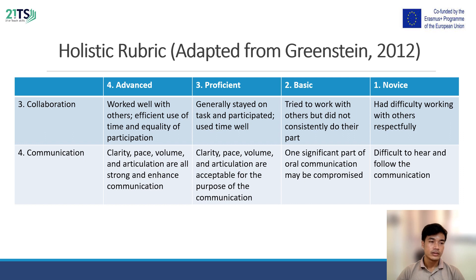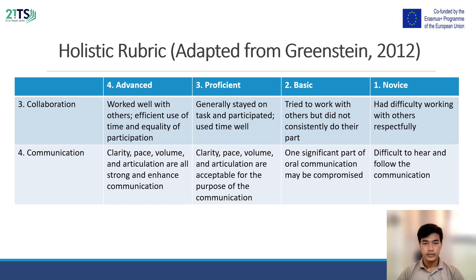At the knowledge level, students have difficulty working with others respectfully. For communication, at the advanced level, clarity, pace, volume, and articulation are all strong and enhance communication. At the proficiency level, clarity, pace, volume, and articulation are acceptable for the purpose of the communication. At the basic level, one significant part of overall communication may be compromised. At the knowledge level, communication is difficult to hear and follow.